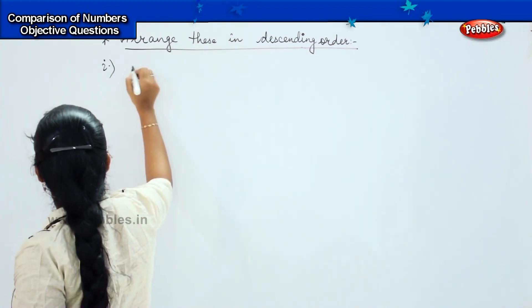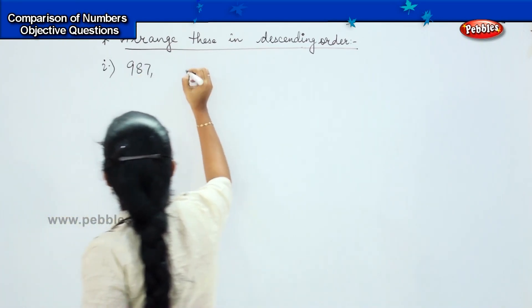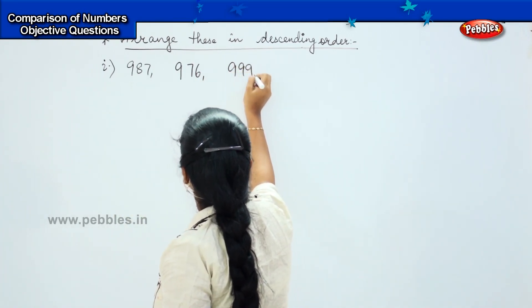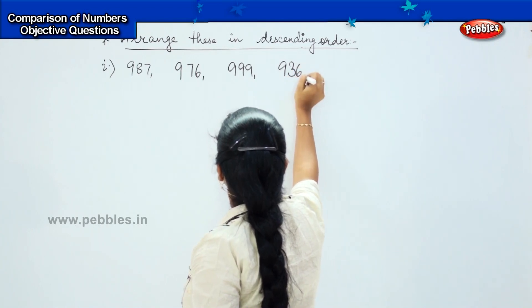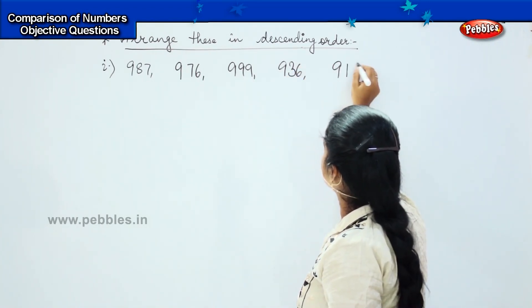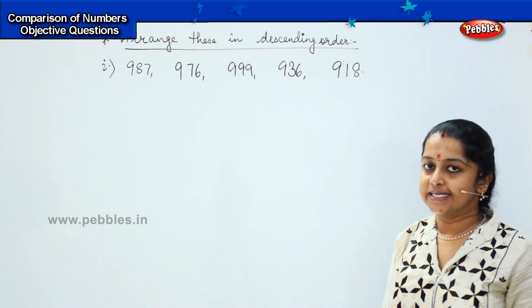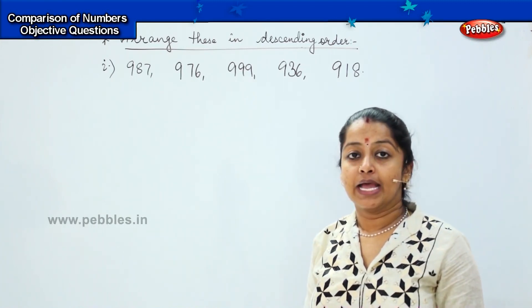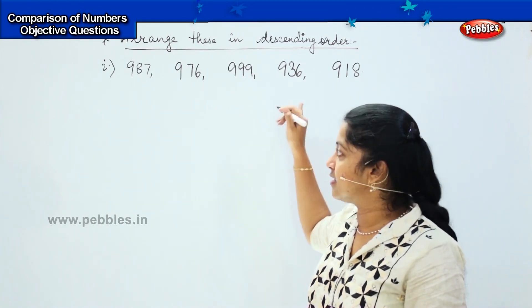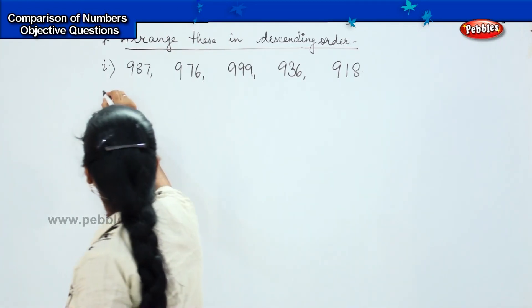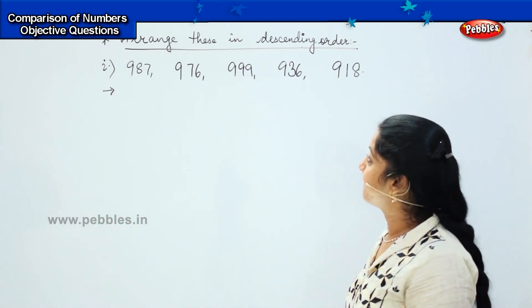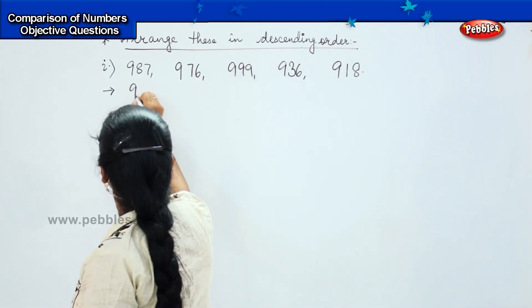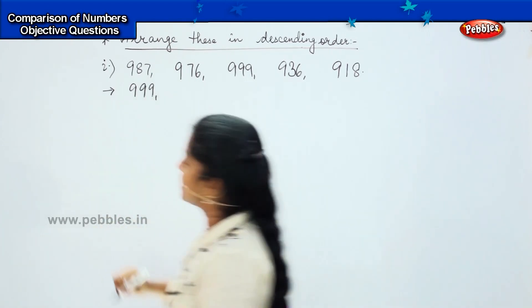Here comes my first descending order question: 987, 976, 999, 936, 918. We have to arrange in descending order, which means we start from the largest number. Can you find the largest number? It is 999. So the first number will be 999. What is the number which comes next?